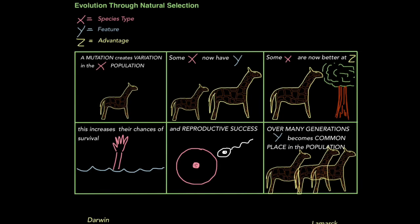And this works for any organism. For example, a mutation creates variation in the polar bear population. Some polar bears now have whiter fur than others. Some polar bears are now better at camouflage and therefore better at catching prey and avoiding hunters. This increases their chances of survival and reproductive success. And over many generations, white fur becomes commonplace in the population. Or a mutation creates variation in the bacteria population. Some bacteria now have resistance to an antibiotic. Some bacteria are now better at surviving the antibiotic taken by the patient. This increases their chances of survival and reproductive success. Over many generations, antibiotic resistance becomes commonplace in the bacteria population. It works for any species with any feature.